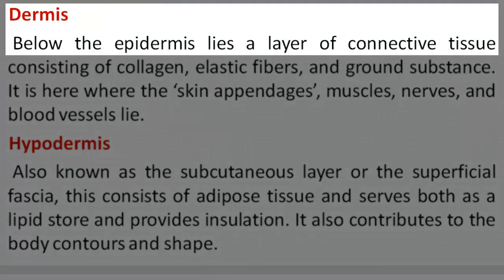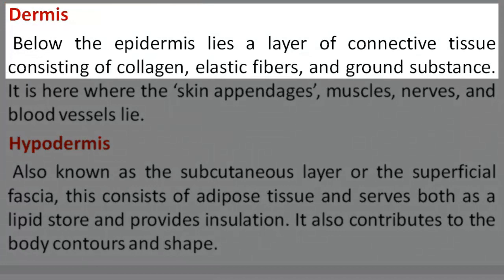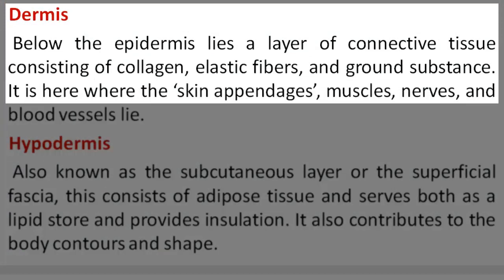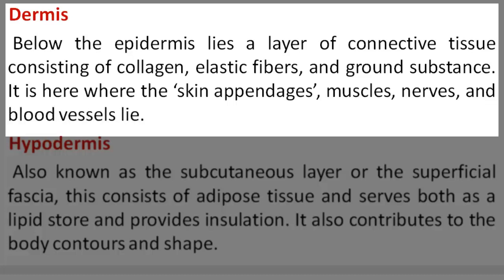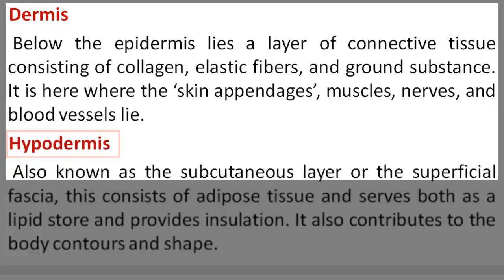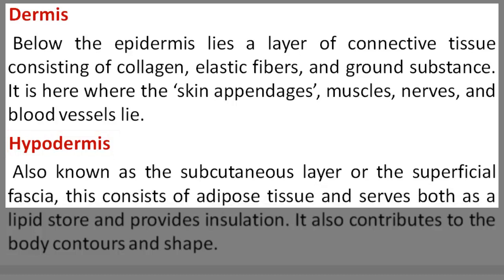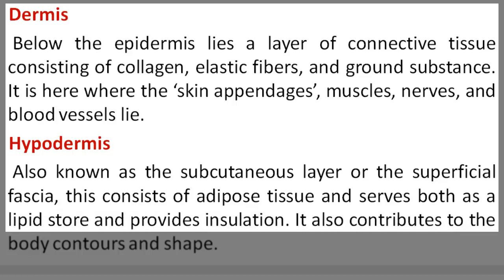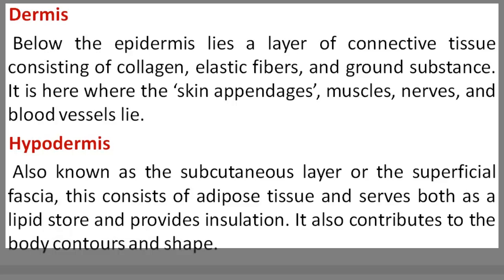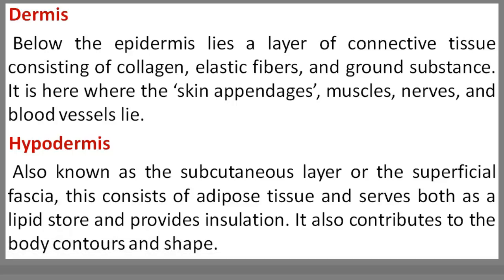Reading 3. Dermis: Below the epidermis lies a layer of connective tissue consisting of collagen, elastic fibers, and ground substance. It is here where the skin appendages, muscles, nerves, and blood vessels lie. Hypodermis: Also known as the subcutaneous layer or the superficial fascia. This consists of adipose tissue and serves both as a lipid store and provides insulation. It also contributes to the body's contours and shape.